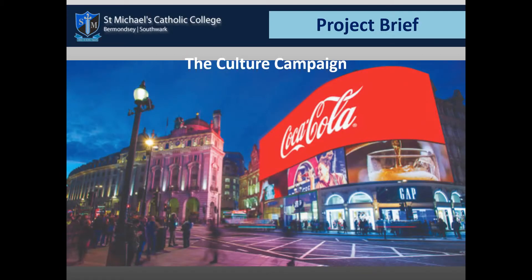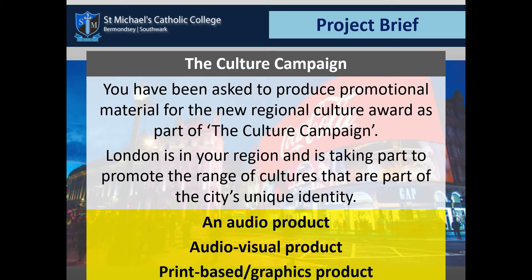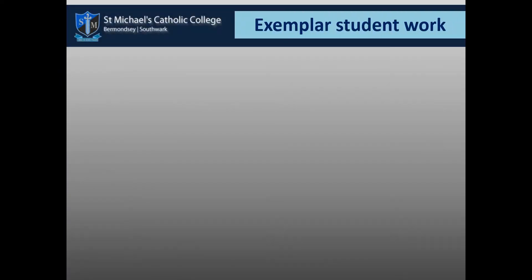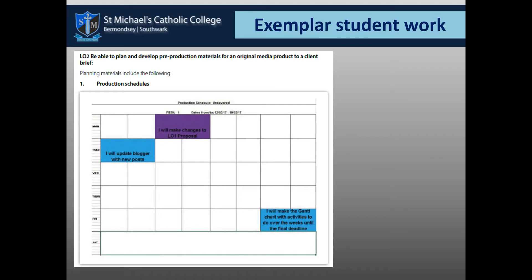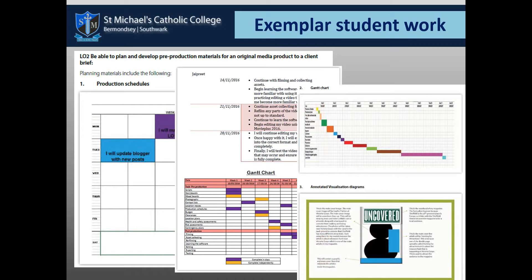Here's an example scenario you might encounter: a culture campaign asking you to create promotional material promoting London. It may well be any one of these, though typically it's a print-based graphics product that is created. Some examples of what you would do in this coursework include looking at production materials, scheduling, and how to plan your time. Different techniques might include using Google Sheets to create a Gantt chart, which helps you plan and sequence things — as is done in industry. You'd also need to annotate and write about the kinds of visualisations or images and development ideas that you create.